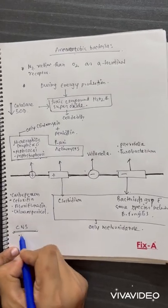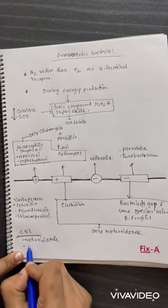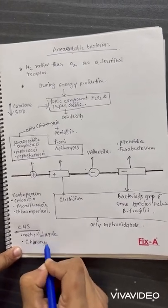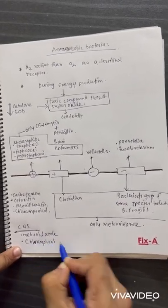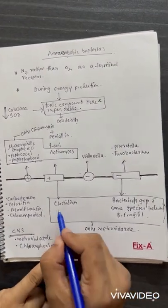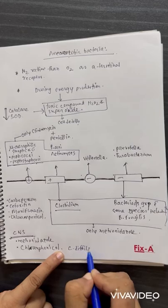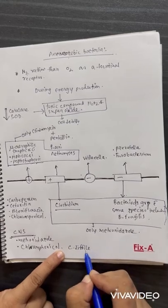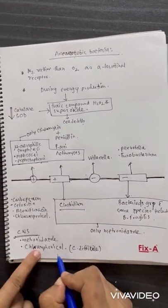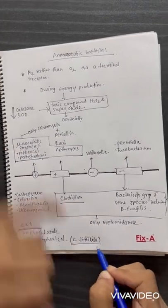Another antibiotic is chloramphenicol. For CNS anaerobic infections, the anaerobic coverage is metronidazole and chloramphenicol. However, chloramphenicol does not work against Clostridium difficile, and there are other antibiotics that also cannot kill Clostridium difficile.